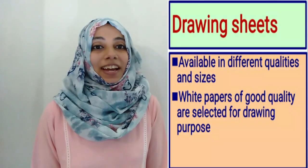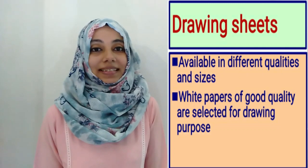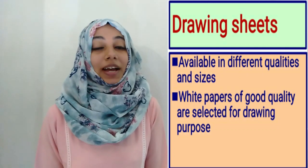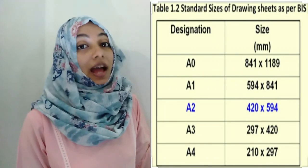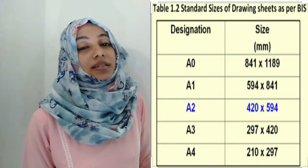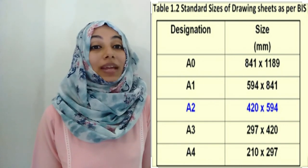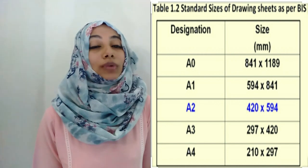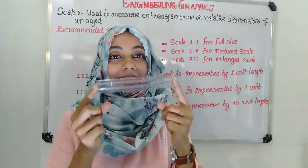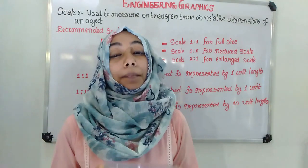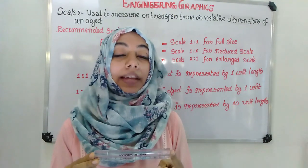Drawing sheets are available in different qualities and different sizes. Here is a tabular column showing 5 types of drawing sheets and their dimensions. Please note the dimension of A2 drawing sheet, which is 420 by 594 mm. Next is scale. It is used to measure or transfer the relative dimensions of an object.